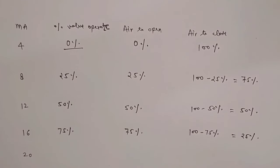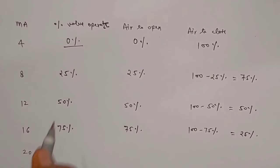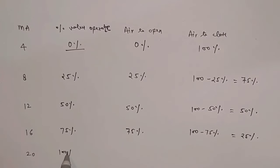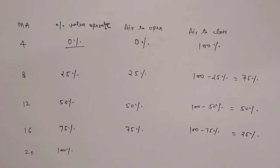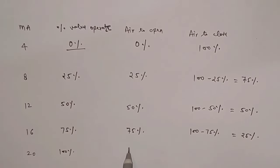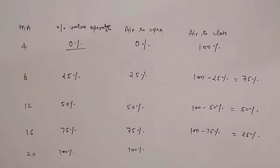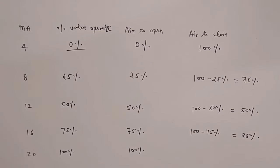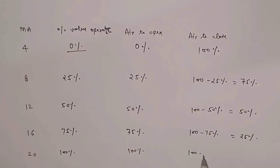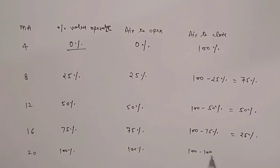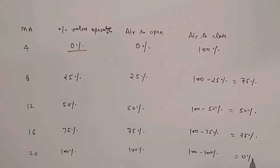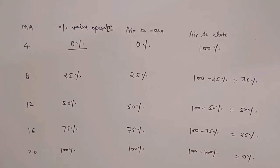Similarly, at 20 milliampere signal, it will be 100%. So the opening percentage of the air-to-open control valve is 100%. And the air-to-close control valve opening will be 100 minus 100%, meaning 0%.